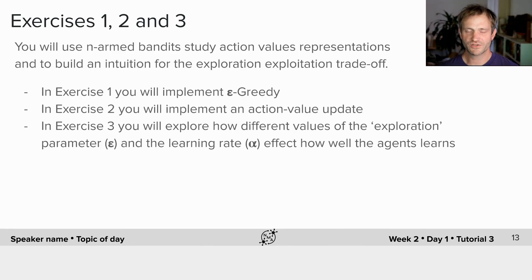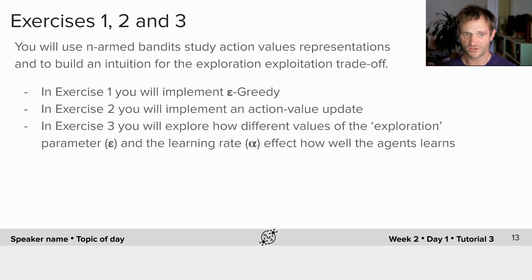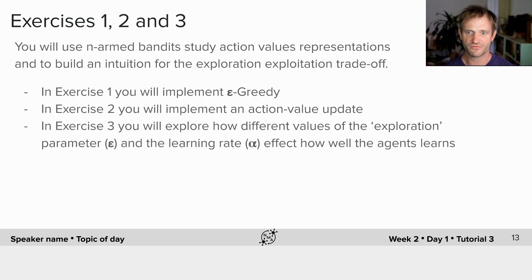In exercises 1, 2, and 3 today, you will use an n-armed bandit to study action value representations and build an intuition for the exploration-exploitation trade-off. In exercise 1, you will implement the Epsilon Greedy policy. In exercise 2, you will implement an action value update function. In exercise 3, you will explore how different values of the exploration parameter Epsilon and the learning rate parameter Alpha affect how well the agent learns. Good luck!